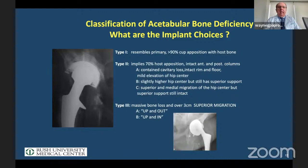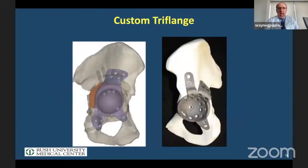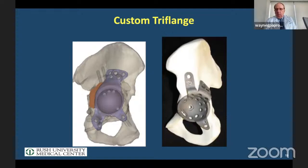Depending on whether it's easy, hard, or more involved — a type three — we need to know our implant choice. Worldwide there are two choices: tantalum cups with augments — I use tantalum because it has a 20-year history of longevity no other specialized surface can match — and the second choice is a custom tri-flange. I show cages on the right; where finances are an issue some cages are still used, but our data shows cages do not work, especially in the more difficult cases.